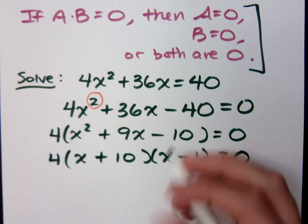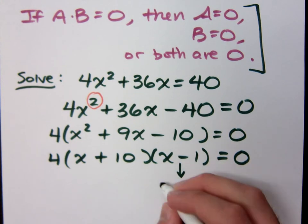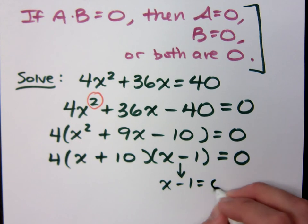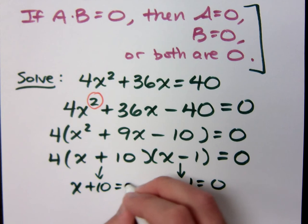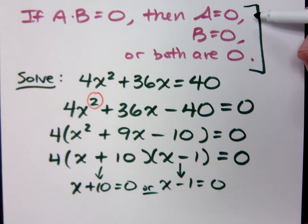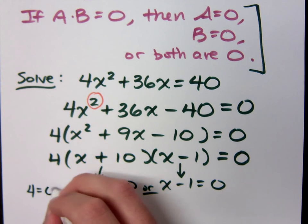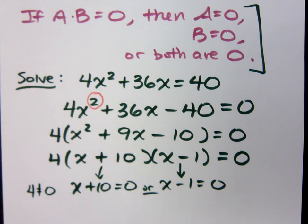Now according to the zero factor theorem, I get a solution from this guy. So when x minus 1 is equal to zero, or when x plus 10 is equal to zero, that's what the zero factor theorem says. It says that one of these factors has to be zero. Now why am I not doing anything with the four? Four. Does it ever equal zero? No. Never. It's not a variable expression, therefore it cannot contribute to our solutions.